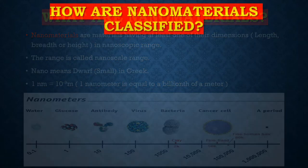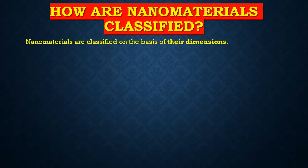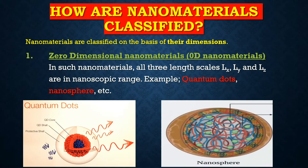Nanomaterials are classified on the basis of their dimensions. The first classification is zero-dimensional (0D) nanomaterials. In such nanomaterials, all three length scales — Lx, Ly, and Lz — are in nanoscopic range, meaning length, breadth, and height are all within 1 to 100 nanometers. Examples are quantum dots and nanospheres, which have all three dimensions within the nanoscopic range.